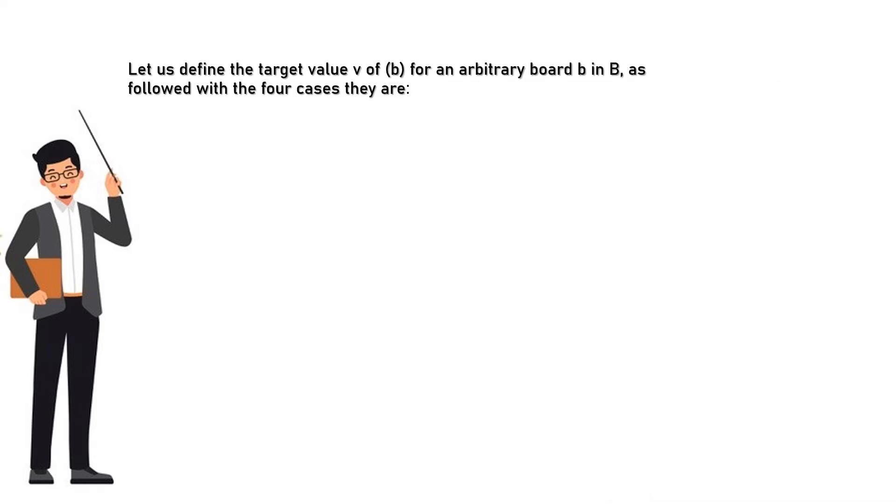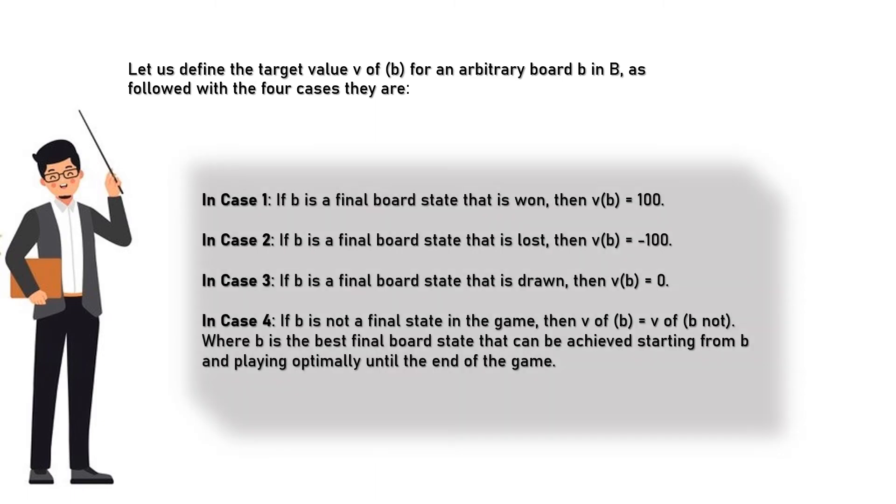Let us define the target value of V(b) for an arbitrary board b in B as followed with four cases. In case one, if b is a final board state that is won, then V(b) equals 100. In case two, if b is a final board state that is lost, then V(b) equals minus 100.